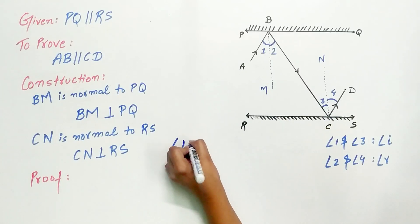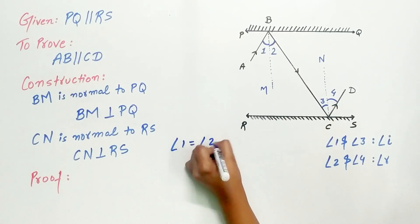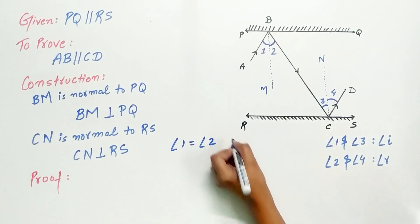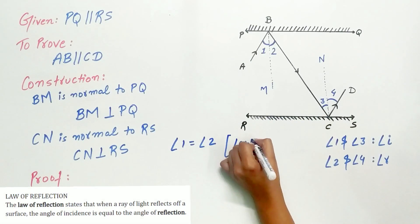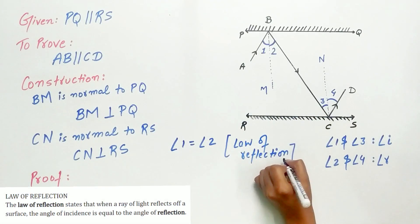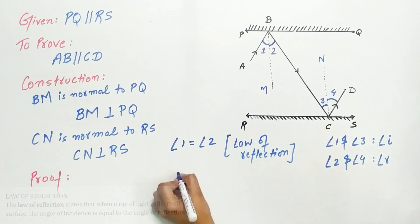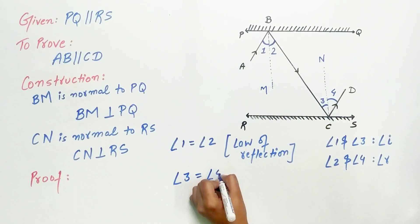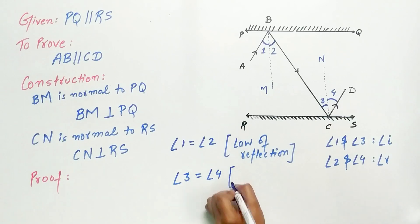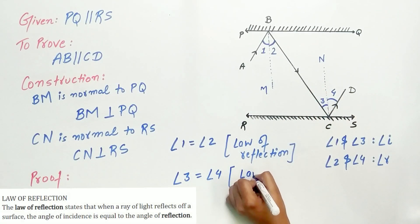Now we know angle 1 is equal to angle 2 by the law of reflection, which states angle of incidence equals angle of reflection. Similarly, angle 3 is equal to angle 4, also because of the law of reflection.